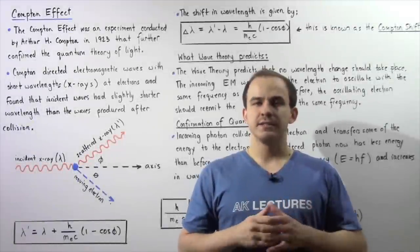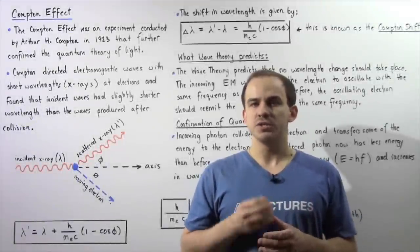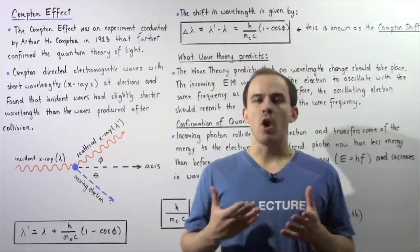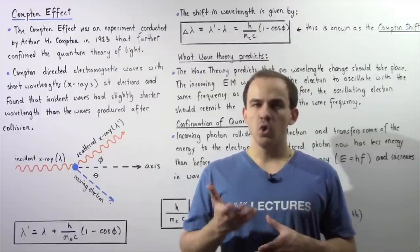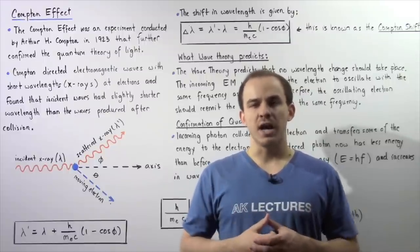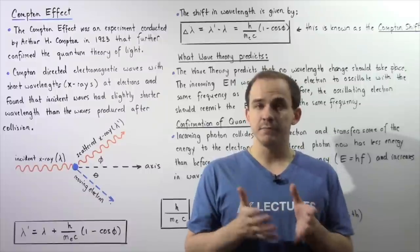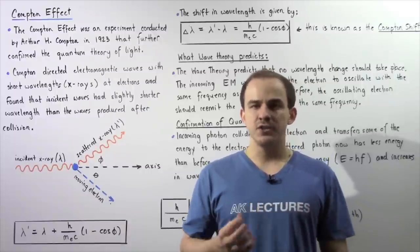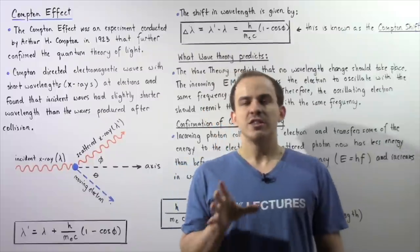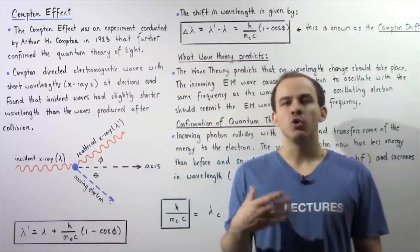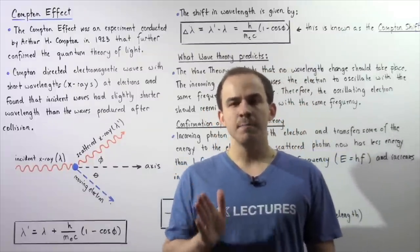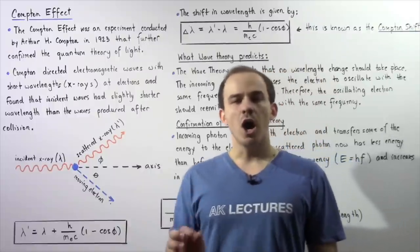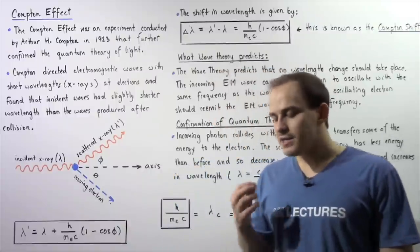The photoelectric effect experiment was the experiment that basically confirmed the quantum theory of light proposed by Albert Einstein. It confirmed the fact that light consists of individual discrete photons that carry a quantity of energy that depends on the frequency of oscillation of the light.